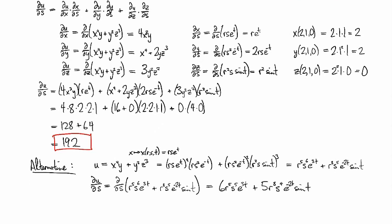And so if I evaluate at 2, 1, 0, then I've got 6 times 2 to the fifth times 1 times 1, plus some crud times zero. And so 2 to the fifth times 6 gives us 192. Hooray! They match.